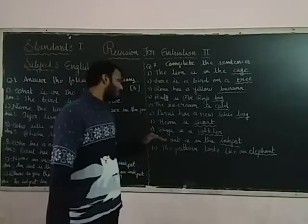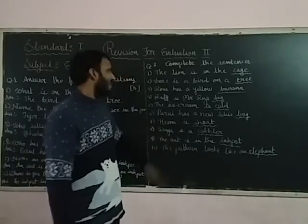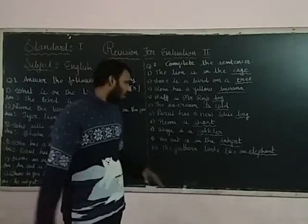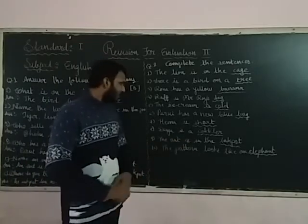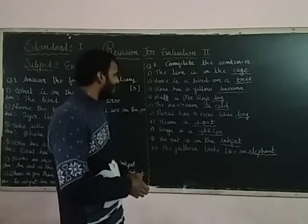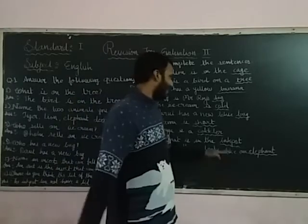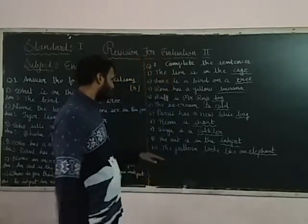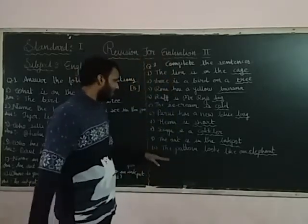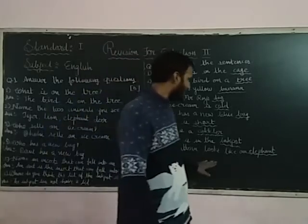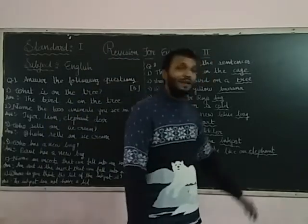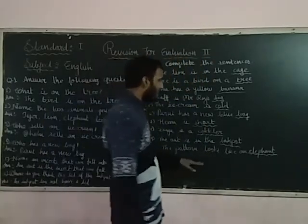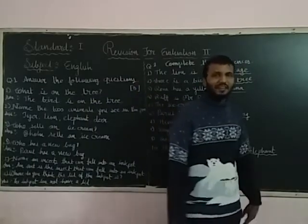Eighth number: The lion is the blank. Answer is: cold. Ninth number: The ant is in the blank. Answer is: inkpot. Tenth number: The battery looks like a blank. Answer is: elephant.